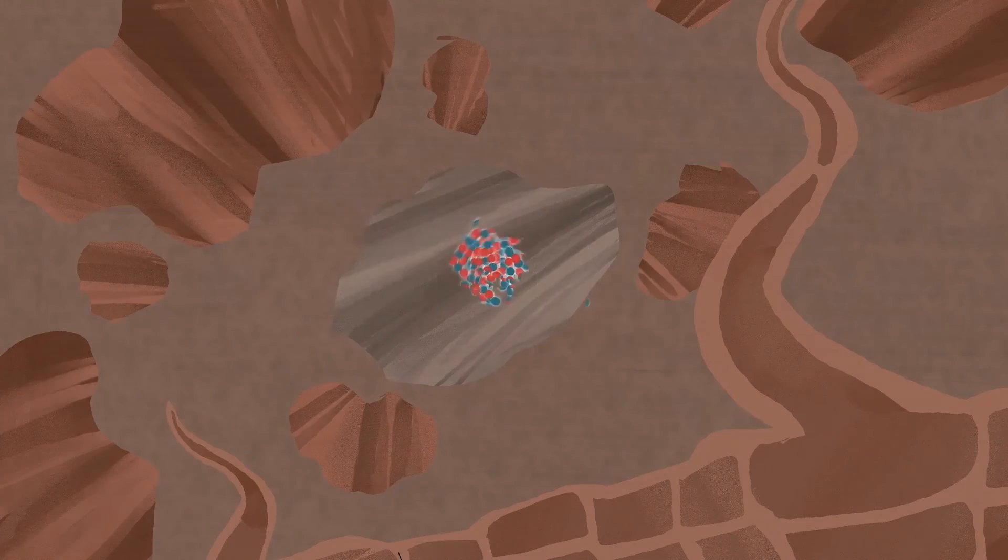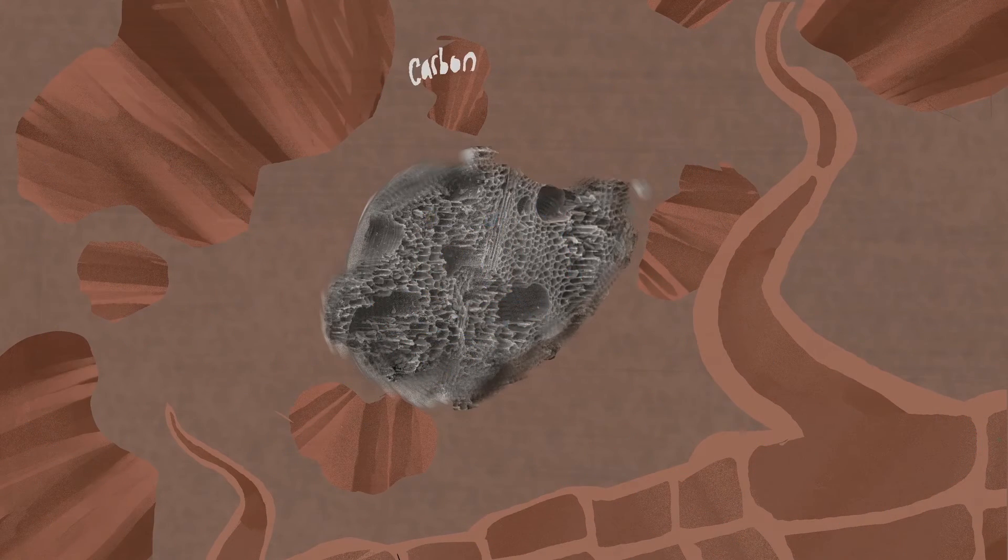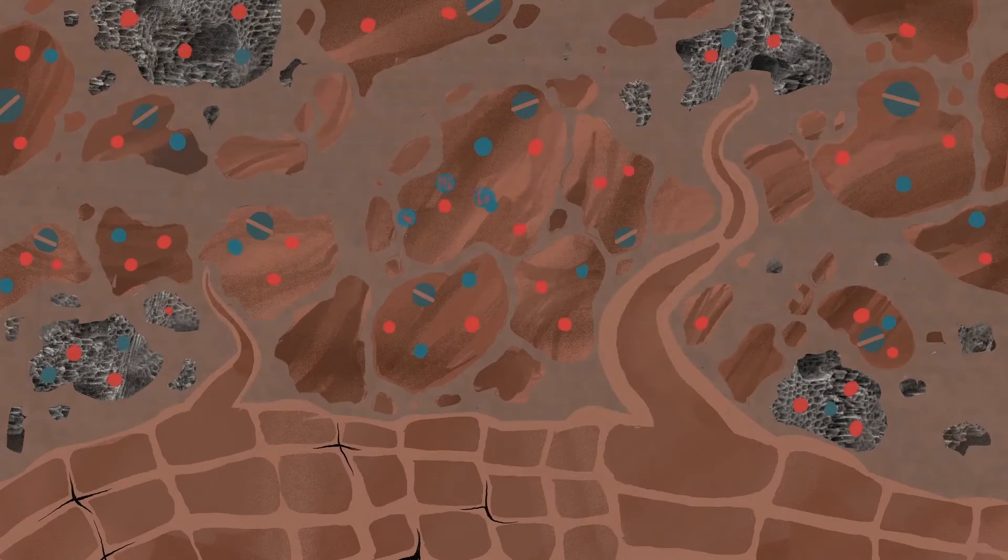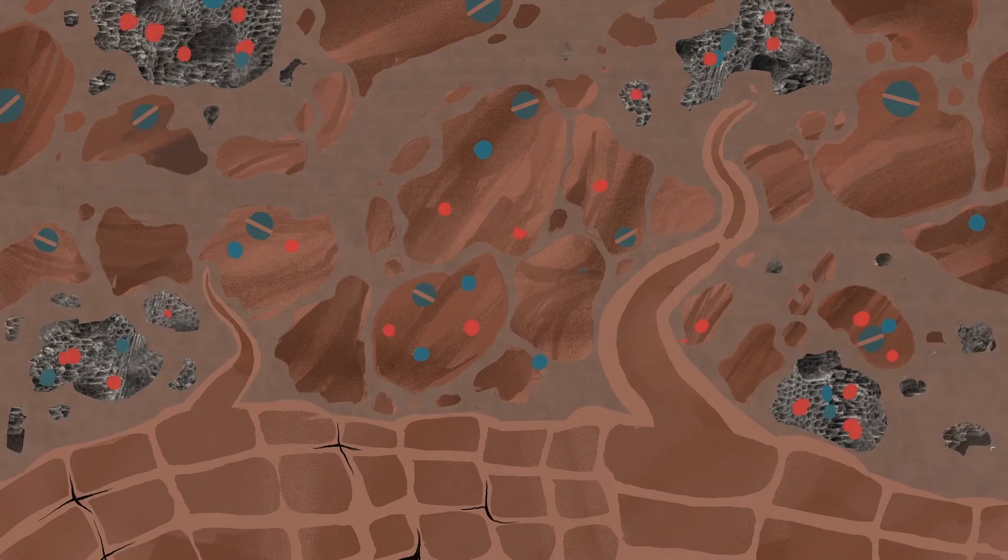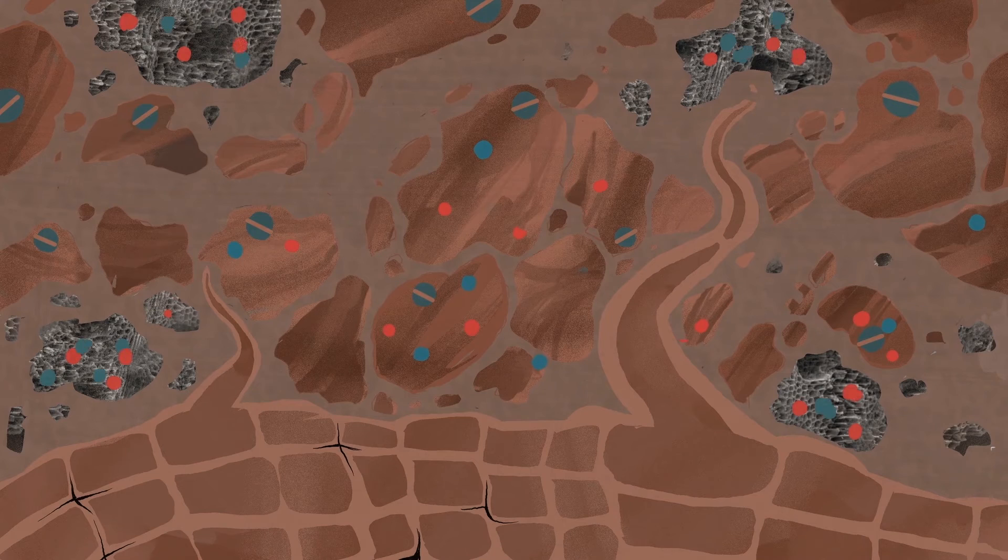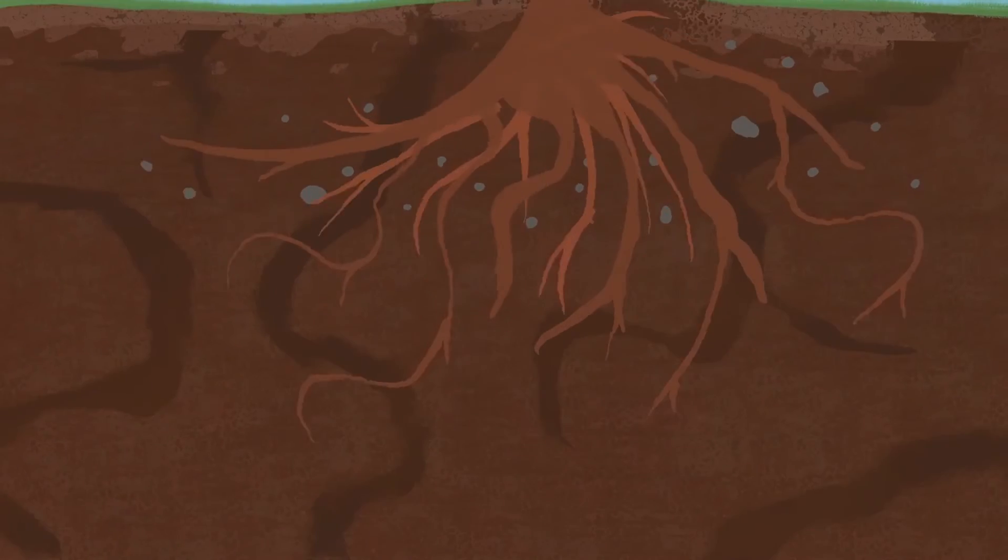Chemical. Biochar is very high in carbon, which is good for a process called cation exchange, which essentially means more nutrients are retained in the soil and available for plant roots.